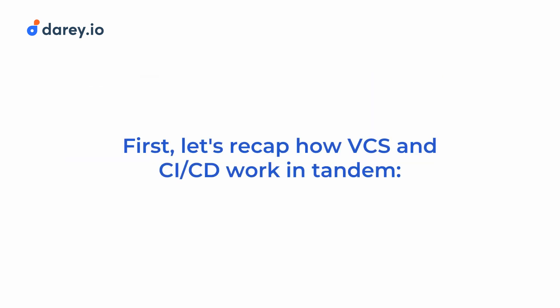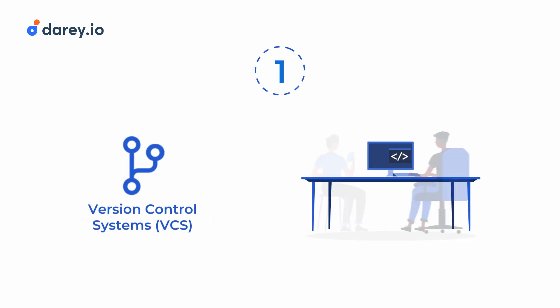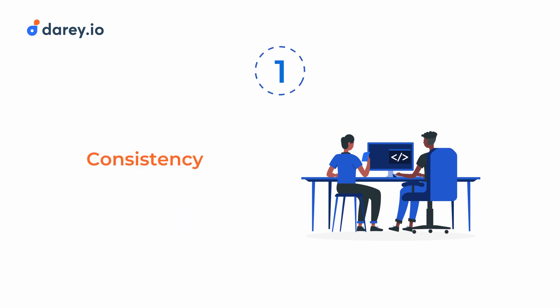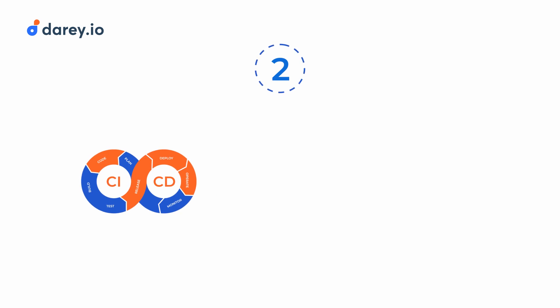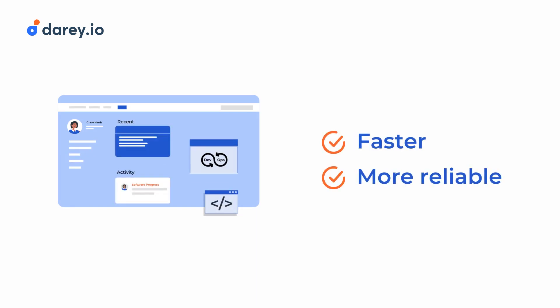First, let's recap how VCS and CI/CD work in tandem. VCS, which is version control system, enables developers to track and manage changes to their code base, ensuring consistency and collaboration among team members. CI/CD automates the process of building, testing and deploying the code changes, making software delivery faster and more reliable.